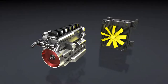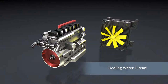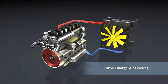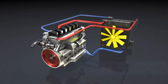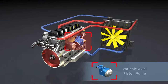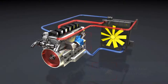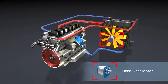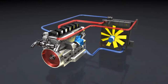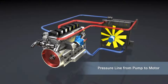A hydrostatic fan drive with a cooling system can be structured as follows: cooling water circuit, turbo charge air cooling, variable axle piston pump, fixed-gear motor, and hydraulic circuit with or without oil cooler as required.